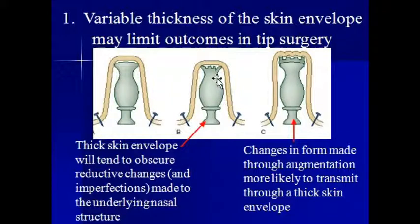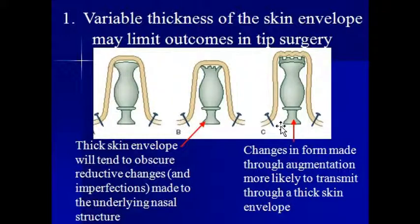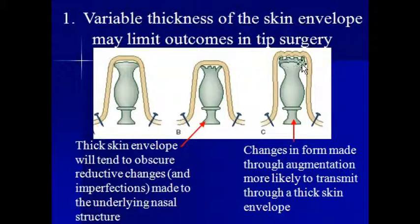Now the good thing is, if there's a mistake as shown by the little crack here, that mistake is also going to be hidden. But the desired changes are also not going to transmit. So with thick skin, the better bet to create the desired contour changes is to actually expand the nose rather than shrink the nose, and to create some contour that pushes and stretches the skin envelope so the contour changes transmit through the skin envelope.